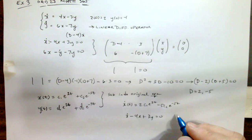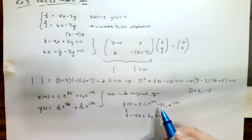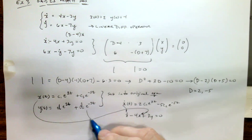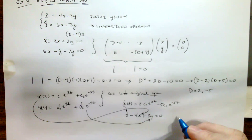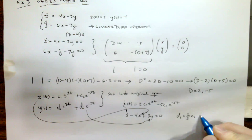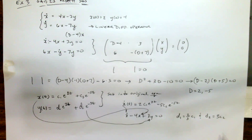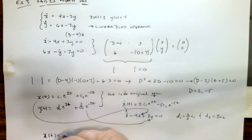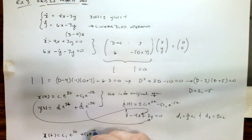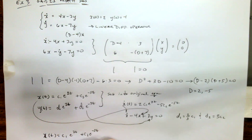We plug in x-dot, then x, and last but not least y. That gets algebraically messy, but what we find is that d₁ equals (2/3)c₁ and d₂ equals 3c₂. Plugging those back into the system: x(t) equals c₁e^(2t) plus c₂e^(−5t), and y(t) equals (2/3)c₁e^(2t) plus 3c₂e^(−5t).